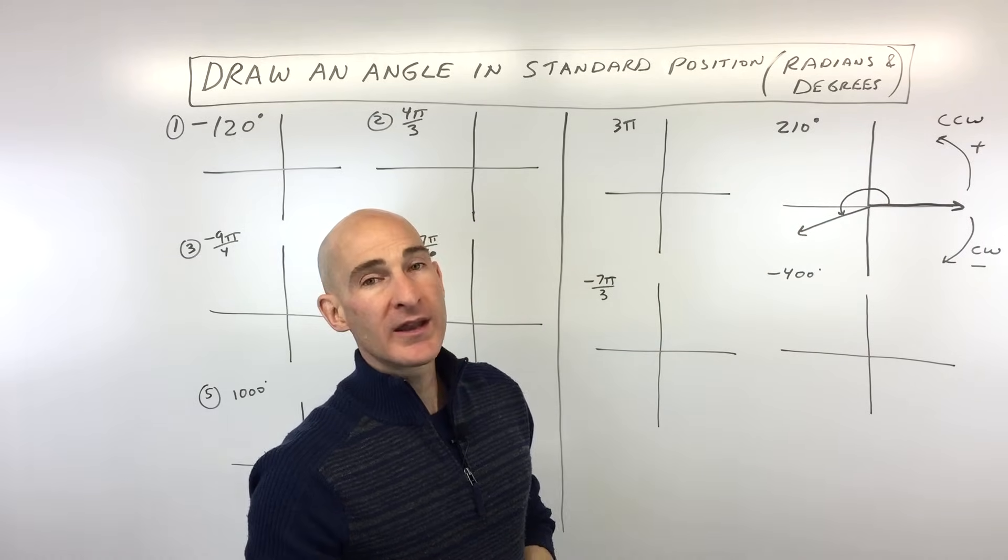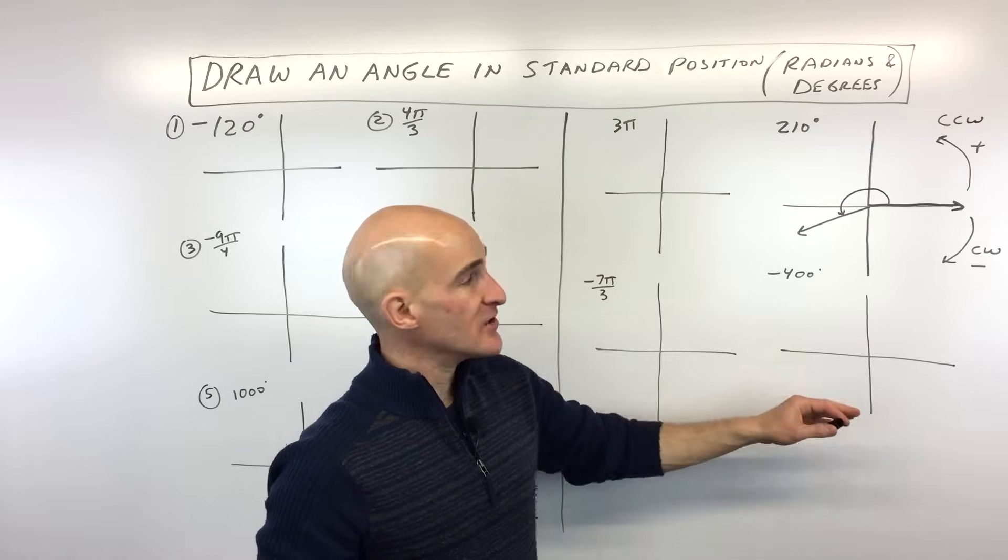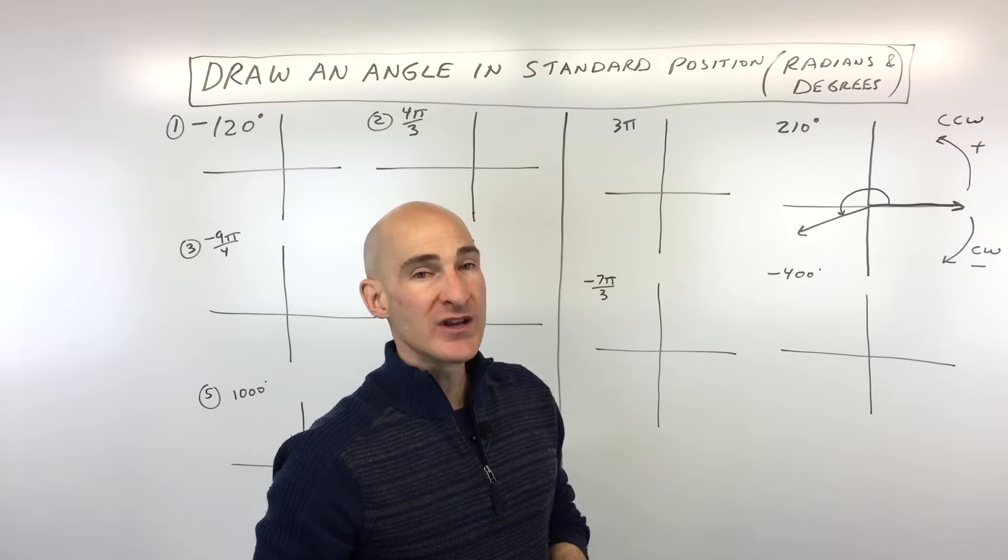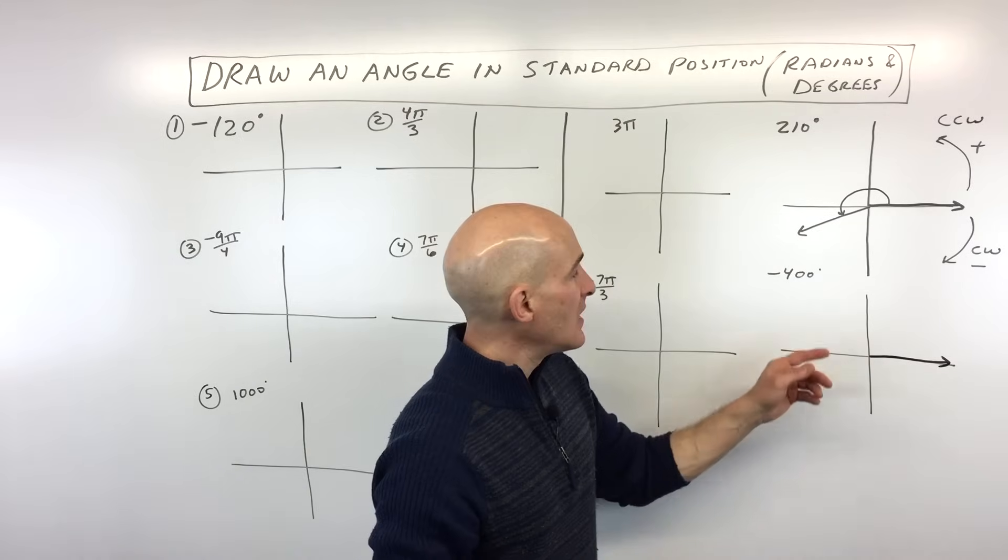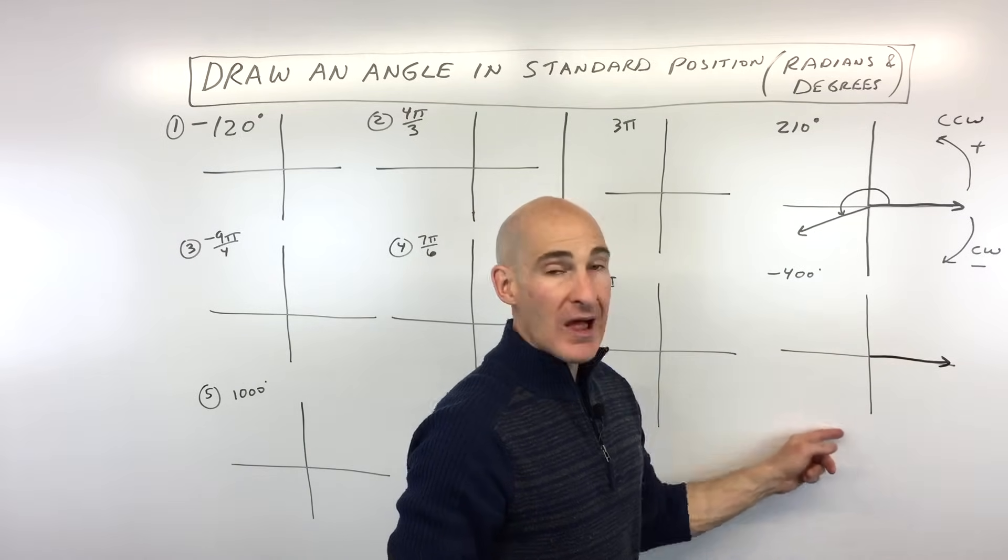So let's go through another example. Let's do one in degrees and then we'll do a couple in radians. So negative 400 degrees. So again, we start here facing the positive x-axis direction. Negative angle means we're going to go clockwise.